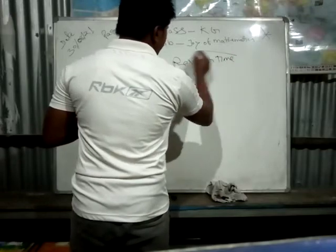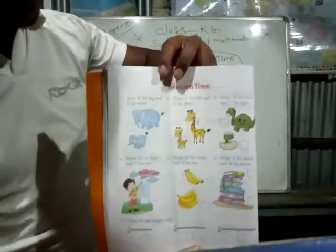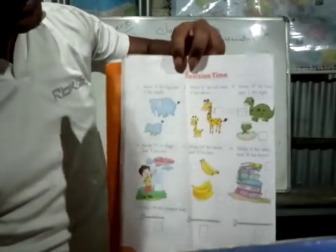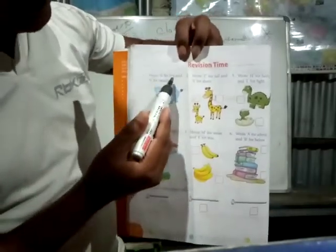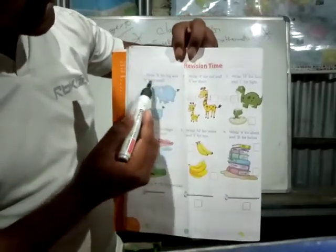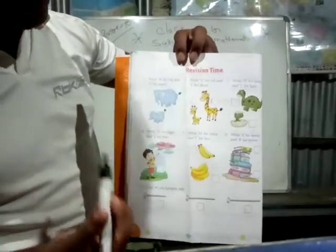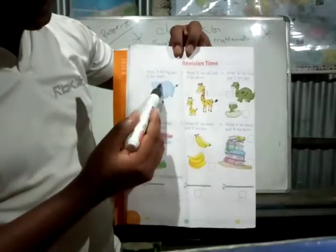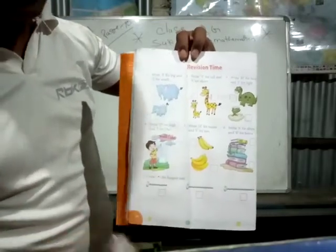This is the revision time. So what is given in your book? You see, here I am trying to show you. Write B for Big and S for Small. So here, suppose two elephants are there.